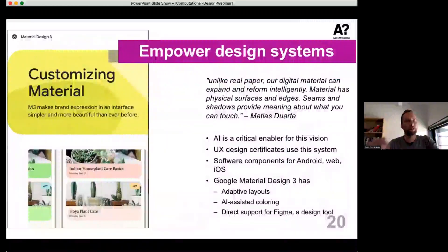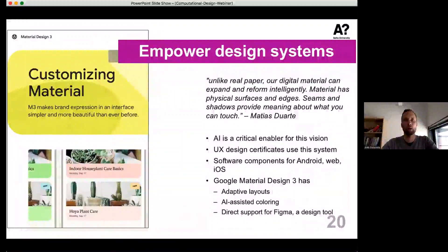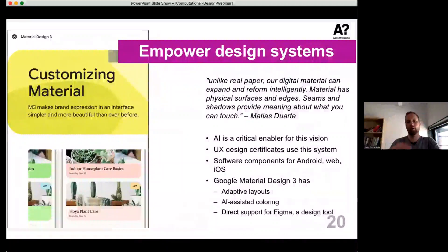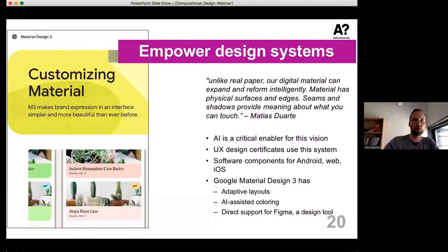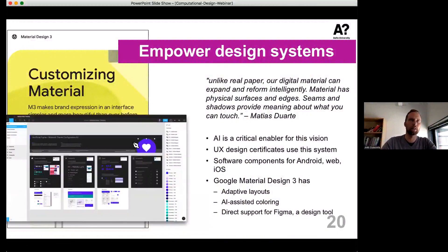It's increasingly important that AI-assisted tools are incorporated into design systems, and this seems to be a direction Google has noticed. Design systems are combinations of design philosophy and guidelines in an actionable way, where you can directly use software components in your user interface. They've been realizing you need to incorporate AI support into these design systems and design tools — for example, working on how to integrate AI-assisted coloring into Figma, a very popular design tool right now.